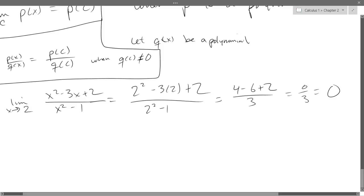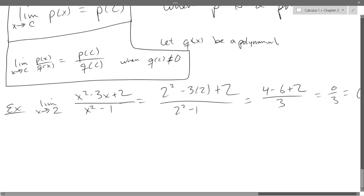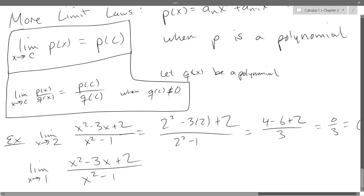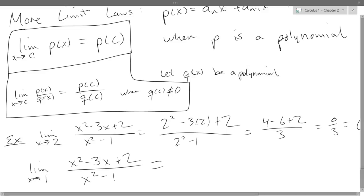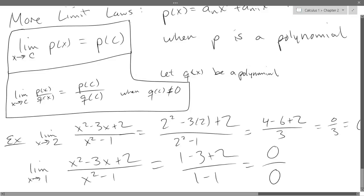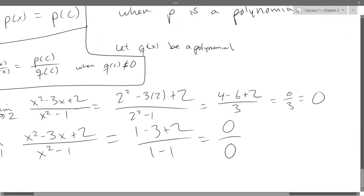What would be a bad x value to approach using the same function? Let's approach 1. There's another bad x value — negative 1. So we'll just go for one of them. Try to apply the rational function limit law and tell me why it's not going to work. So we do get zero over zero. Which zero is the bad zero? The one on the bottom — one on the bottom is the bad zero.